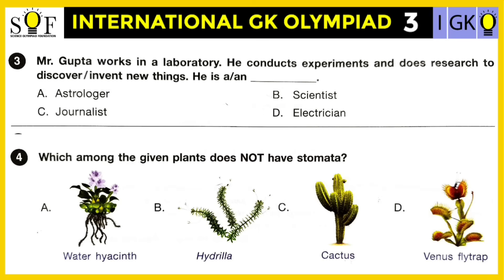Question number three: Mr. Gupta works in a laboratory. He conducts experiments and does research work to discover or invent new things. So he is an astrologer, scientist, journalist, or an electrician? The correct answer is scientist. A scientist works in a laboratory to experiment and discover new facts.